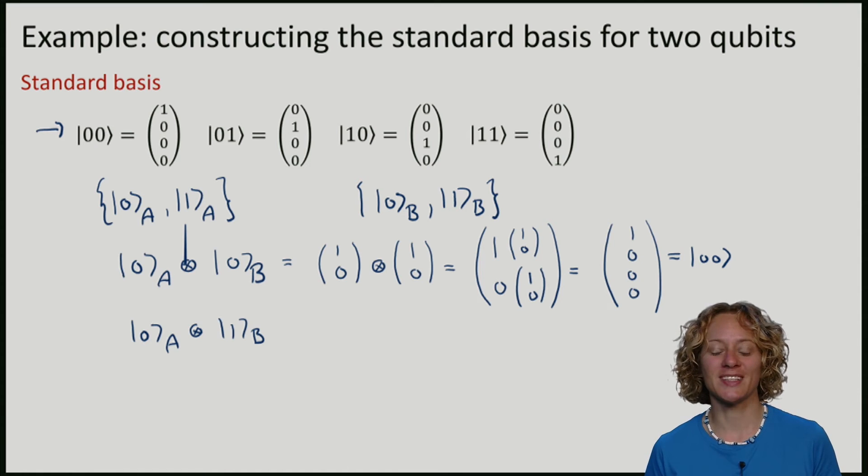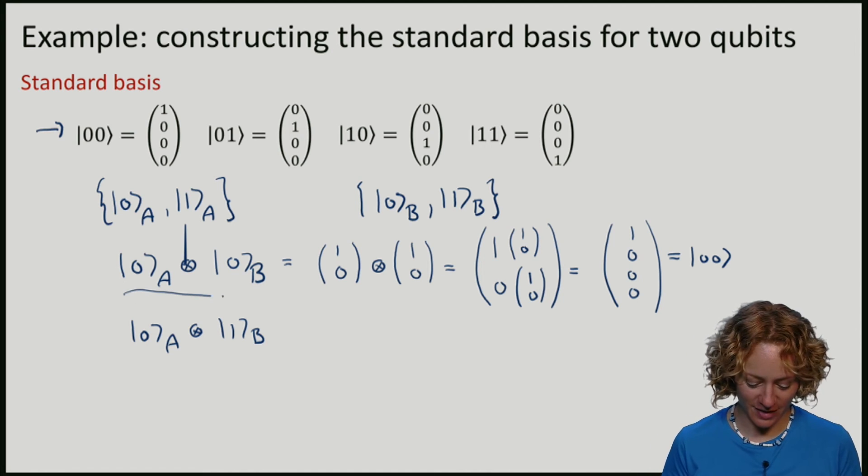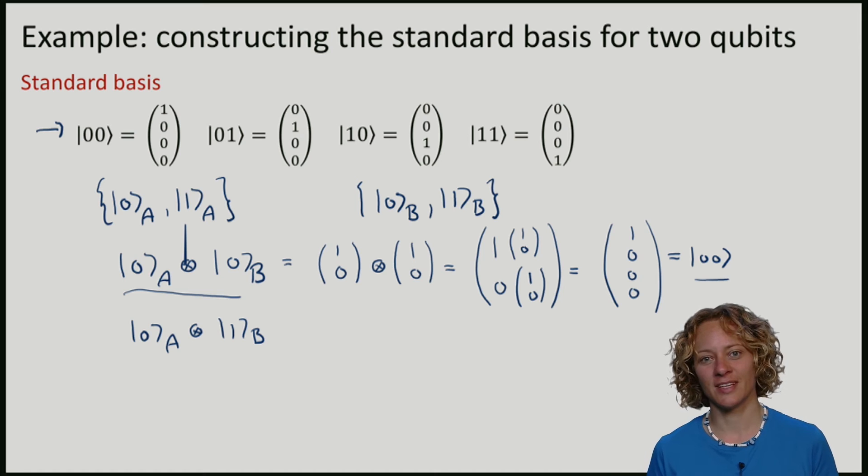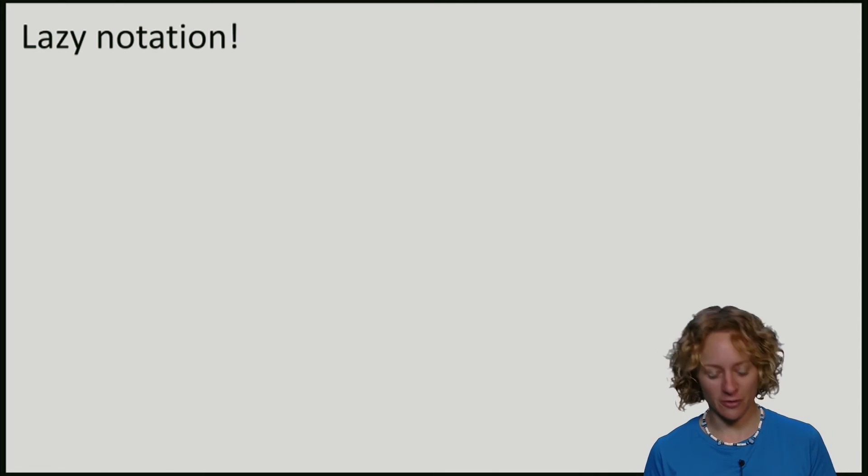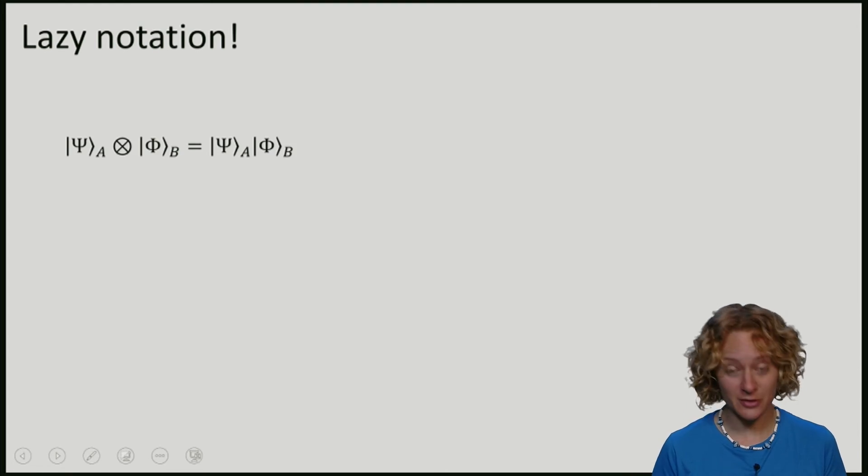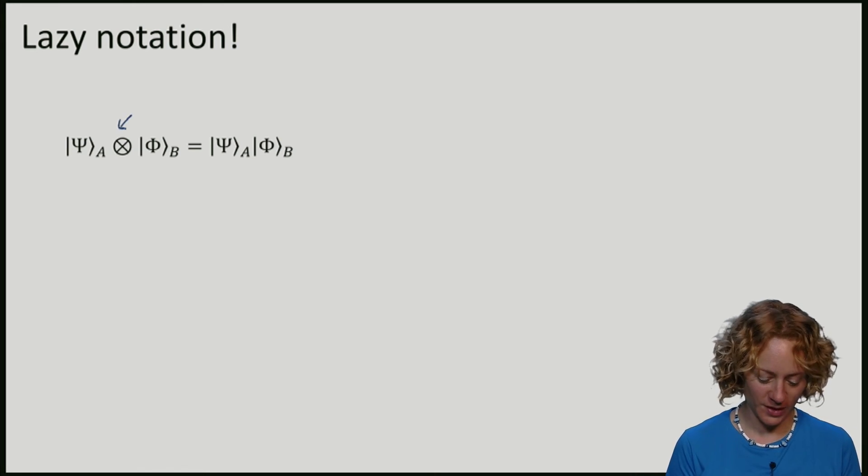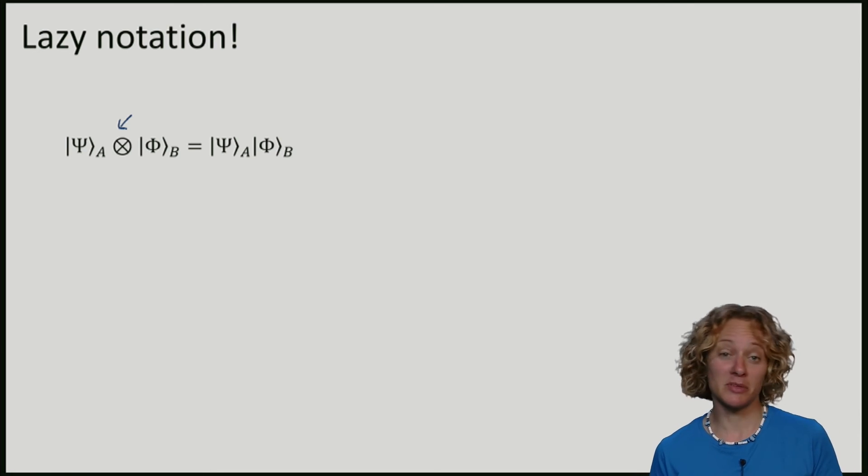You may have noticed now that the left hand side I've written 0 a tensor 0 b and on the right hand side it just says 0 0. Quite often when making the state of multiple qubits people like to use, let me call it, a lazy notation where instead of writing the state of a tensor the state of b we simply omit the tensor product and write psi a psi b.